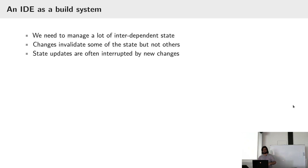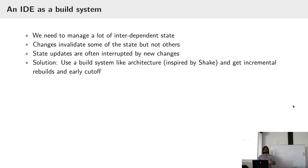State updates are frequently interrupted and left in a half-finished state, so you want to be as incremental as possible so you can build on the work that was done previously. You also want early cutoff, which means something changed and you re-computed stuff, but what you re-computed turned out to be the same as what you had before. You don't want to go re-compute stuff that depends on it because the result is the same — that's early cutoff.